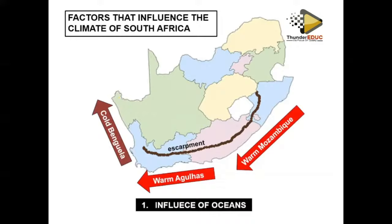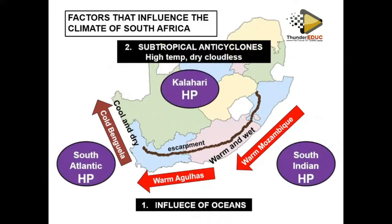We also have the warm Agulhas currents. The warm Mozambique currents influence the warm moist conditions on the east side of the country, while the cold dry conditions are experienced on the west side. Because of that, we move to the second aspect: besides the influence of ocean currents, we have the subtropical anticyclones.